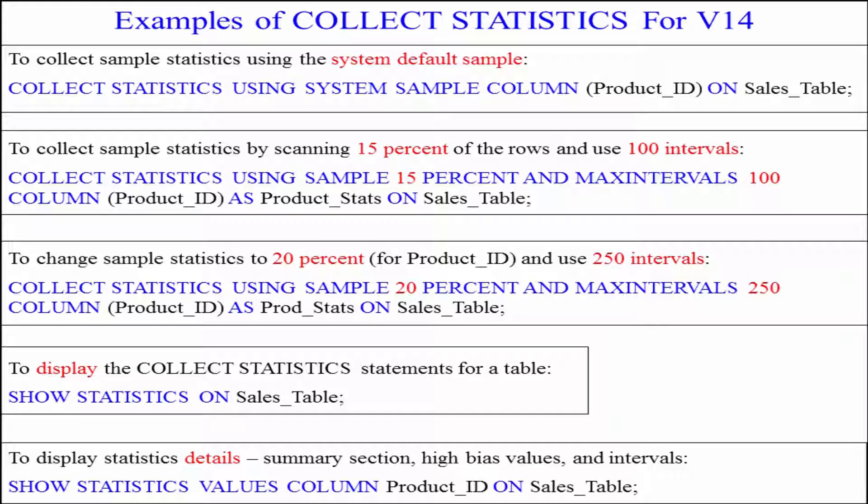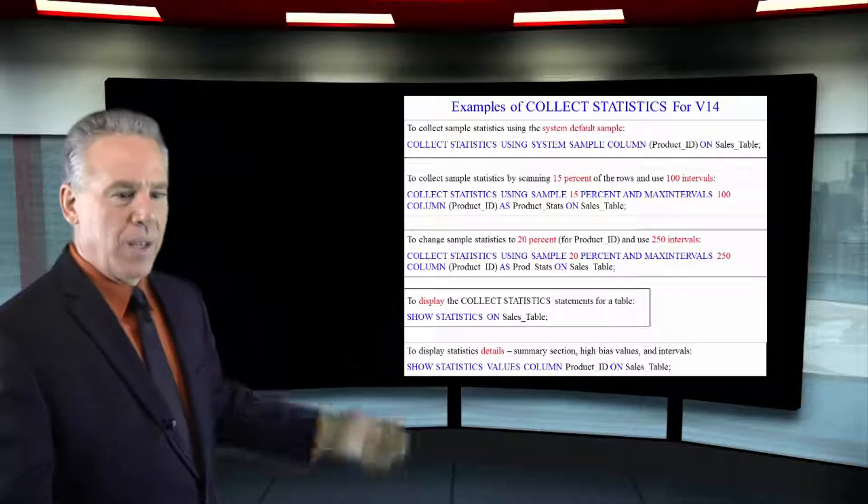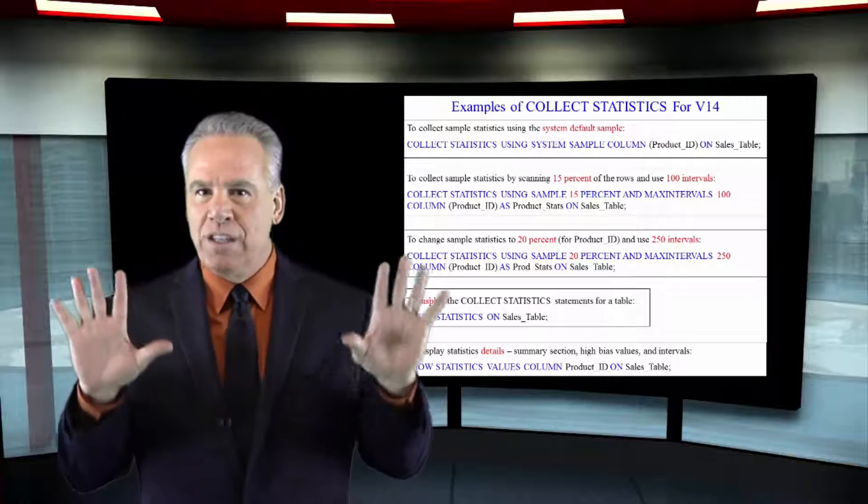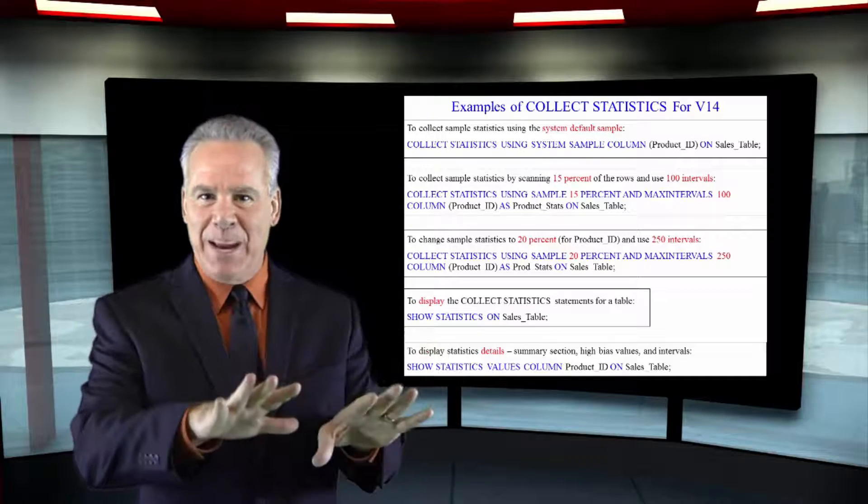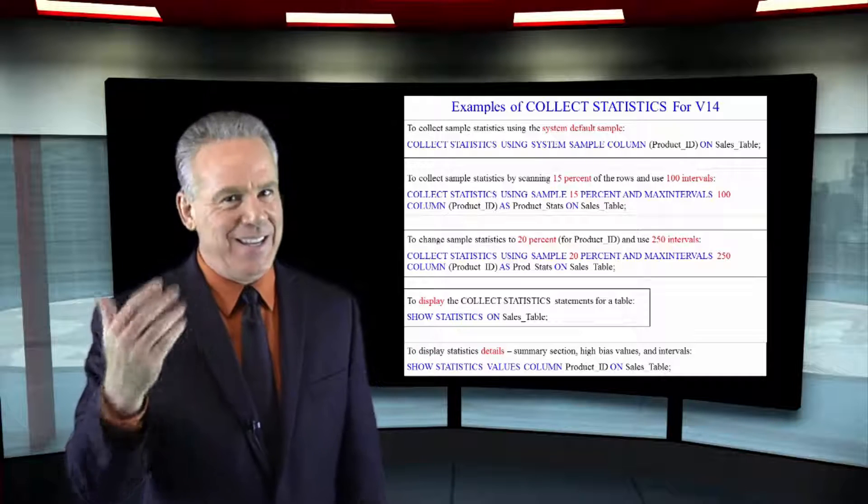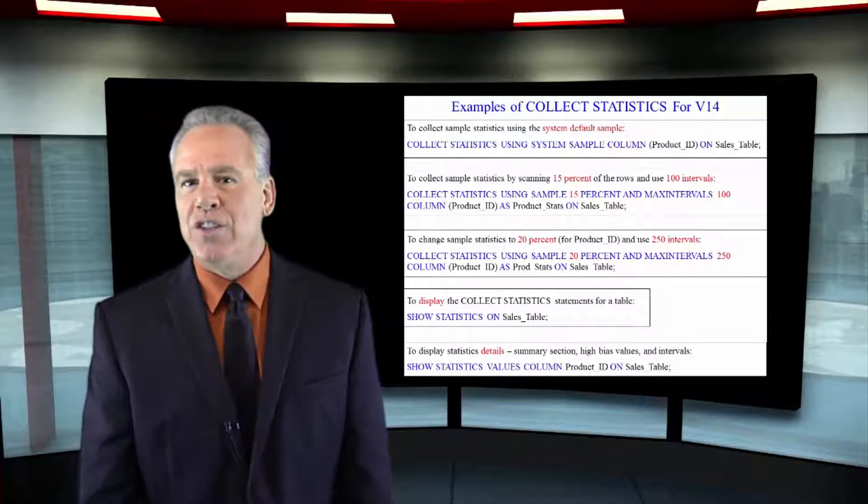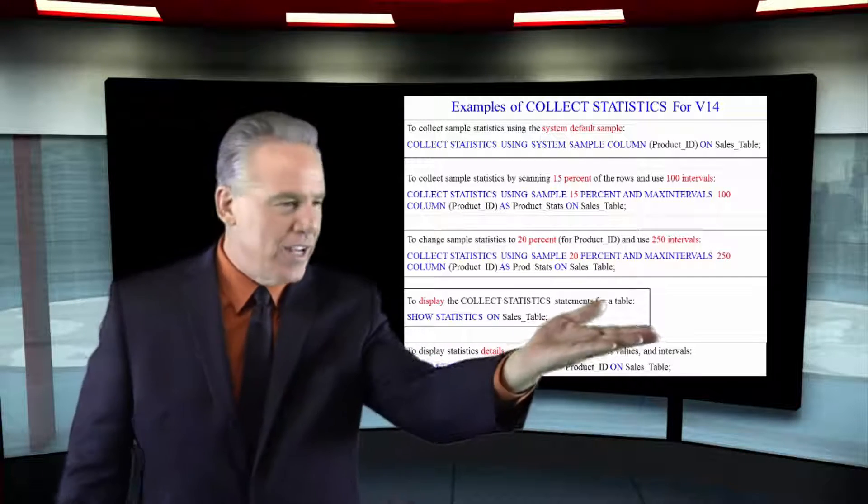Take a look at this. Collect statistics using system sample on the column. It's going to use whatever the default system sample is that's been set by the DBA. But you can change this at any time and look at this next example.